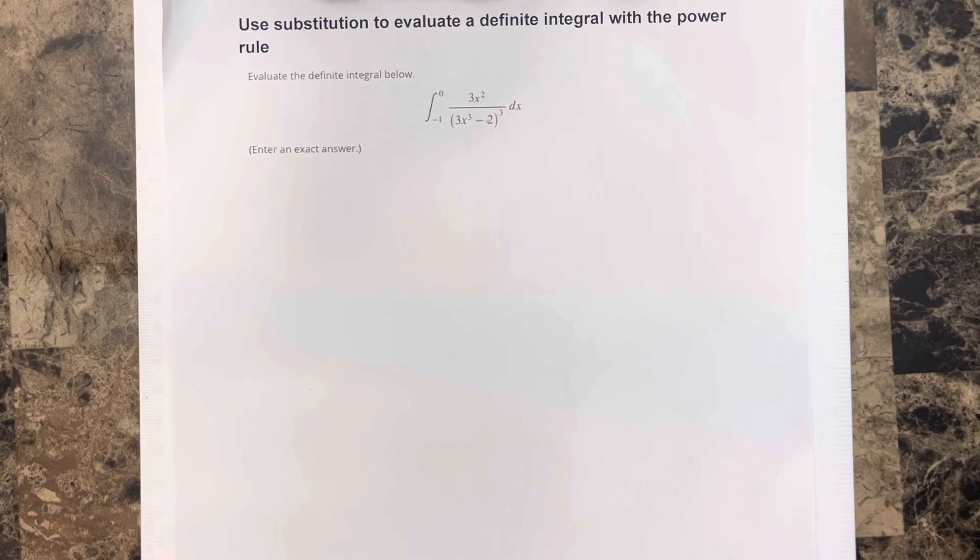In this video, we're going to use substitution to evaluate a definite integral with the power rule. It says evaluate the definite integral below, and they give you the integral from negative 1 to 0 of 3x squared divided by 3x cubed minus 2 cubed dx.